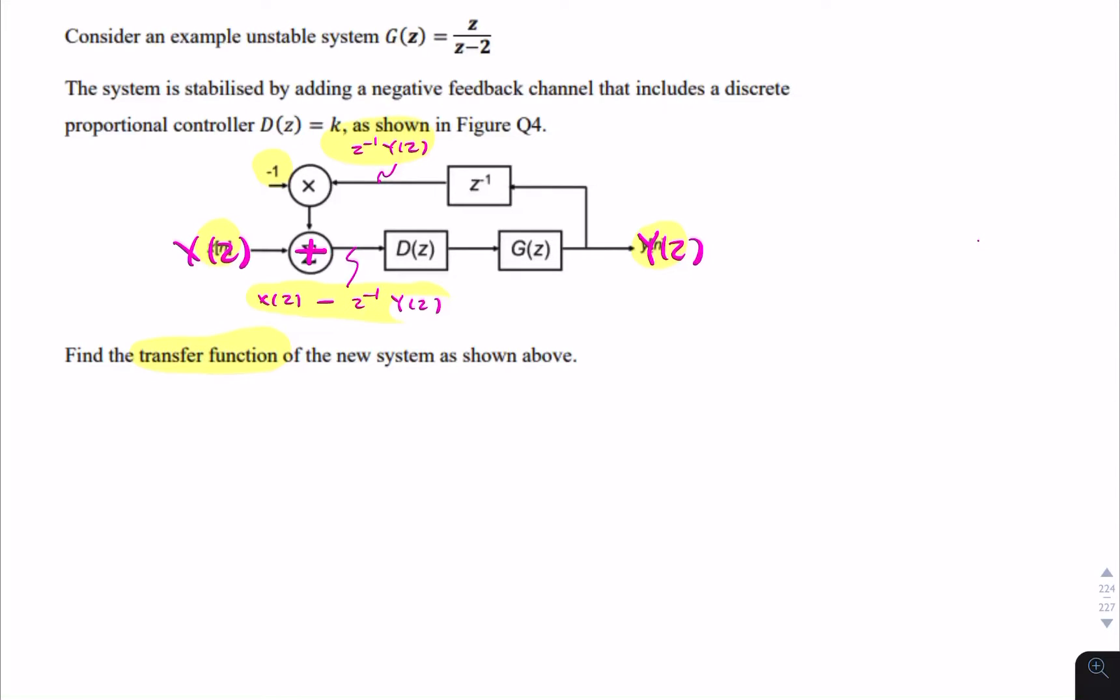So all of this gets multiplied by d and multiplied by g. So we can say the output y of z is simply x of z minus z y of z multiplied by d of z multiplied by g of z. So each of these blocks is multiplied. Why? It's because these are in cascade. And in cascade, we can simply multiply the transfer functions.